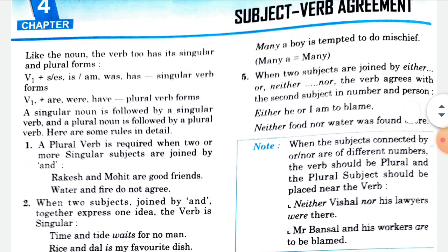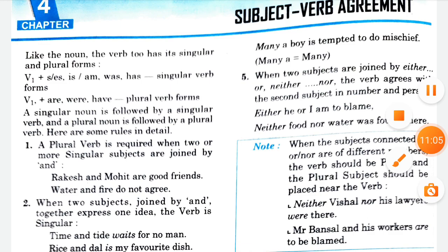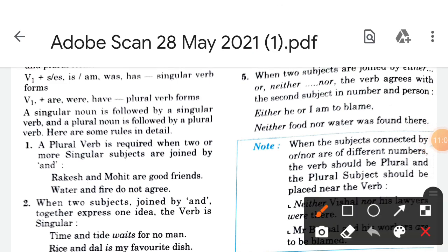When two subjects are joined by 'either...or' or 'neither...nor', the verb agrees with the second subject in number and person. For example: 'either he or I am to blame' — the verb 'am' agrees with the second subject 'I'. If reversed to 'either I or he', the verb becomes 'is', agreeing with 'he'.